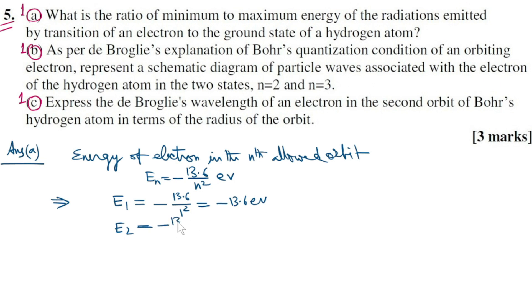E3 equals minus 13.6 by 3 squared equals minus 1.51 electron volts. Similarly, E infinity equals minus 13.6 upon infinity squared, which equals 0 electron volts.